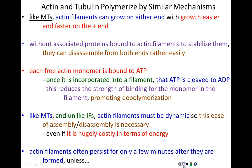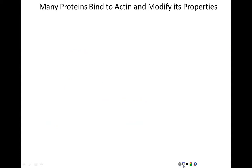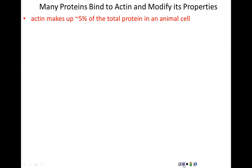Actin filaments are relatively short-lived, often persisting for only a few minutes after they have formed unless accessory proteins bind to actin and cause it to be more stable. About 5% of the total protein in any animal cell is actin. 5% of all the protein in a given animal cell is just made up of actin — that's a huge slice of the pie.